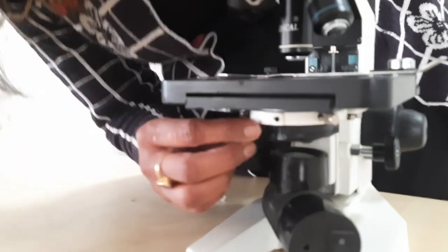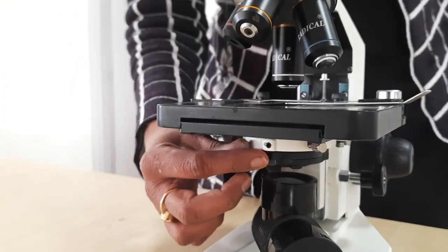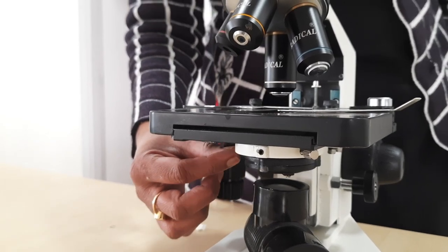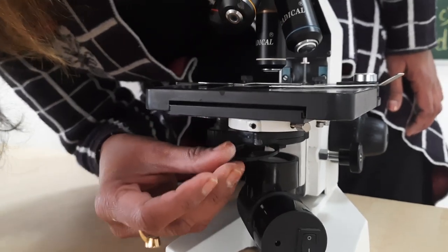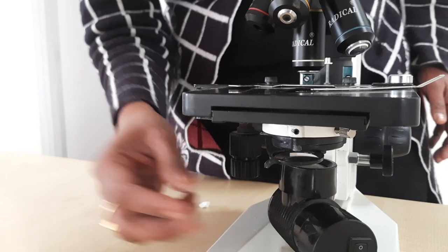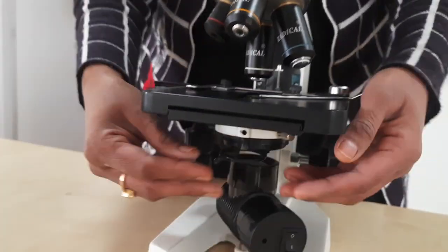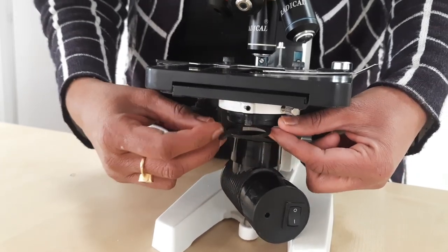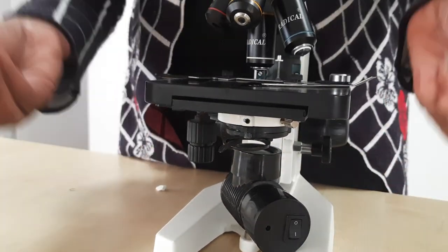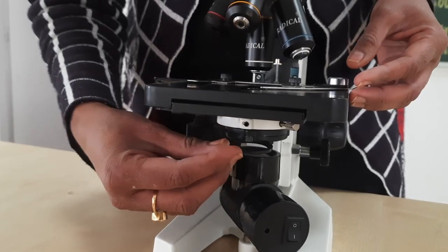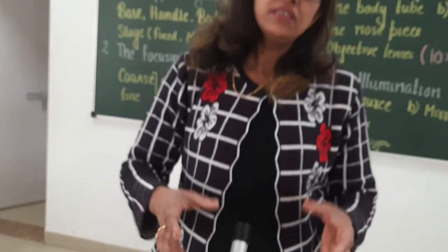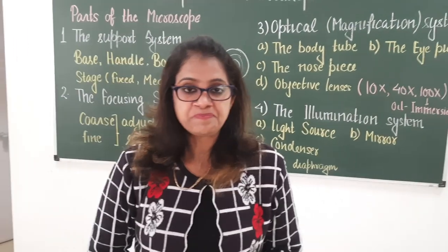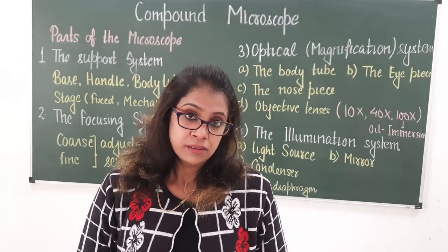The iris diaphragm is placed inside the condenser. There is a knob you can see by which you can control the iris aperture. There is also a circular frame used to place a colored sheet to control the wavelength of light. No colored sheet is placed here since white light is needed for these experiments.